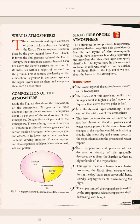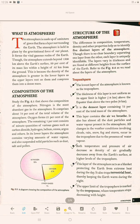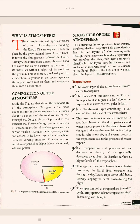Though the atmosphere extends beyond 1500 km above the Earth's surface, 99% of its mass is found closer to the Earth's surface. This is because the atmosphere's density is higher in the lower layers compared to upper layers, as the upper layers rest on them and compress them into a denser mass.